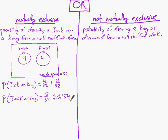That equals eight fifty-seconds, which can be reduced to two thirteenths, or approximately 0.154 as a relative frequency — a 15.4% chance of getting a jack or a king. The addition rule looks like probability of getting a jack plus probability of getting a king.